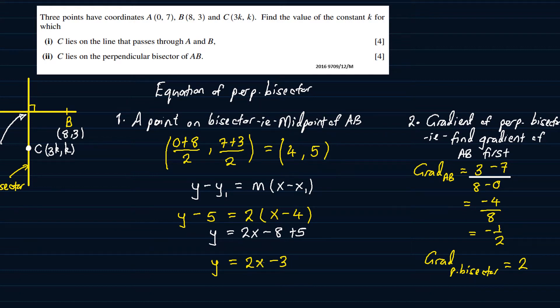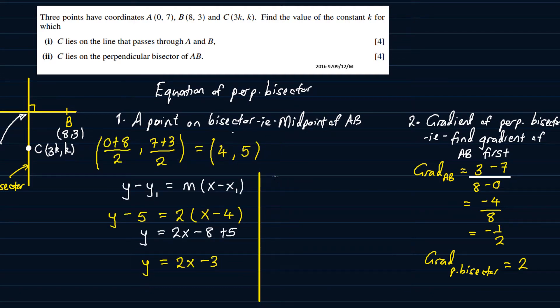Now to answer the question, they say find the values of k for which c lies on the perpendicular bisector of AB. So we are going to say, with the line y is equal to 2x minus 3, if the point c lies there, remember the point c has coordinates 3k and k. So what that means is, if we substitute this into the equation, then in place of y, we put k. So k is equal to 2 of, and in place of x, we put 3k. So from here, k is equal to 6k minus 3. And we can say that 5k is equal to 3. And dividing both sides by 5, k comes out as 3 fifths. So k is equal to 0.6. So that's the final answer.